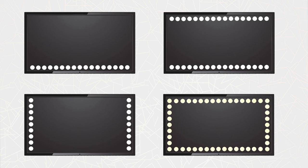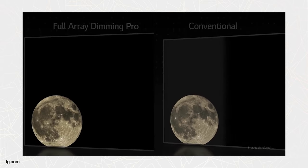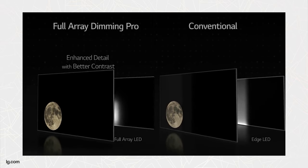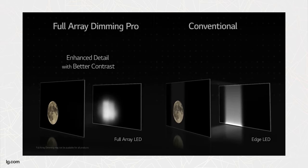Edge lit TVs feature, as the name suggests, LEDs around the edges of the screen. This can be done in a few ways: LEDs along the bottom, along the top and bottom, along the sides, or on all four edges. The main pro is that they are more affordable to produce in a wide range of sizes, but they aren't known for offering the best colors, motion or viewing angles. The TVs also tend to have a low contrast ratio and struggle to offer pure blacks, as light can spread into areas that should be dark, giving blacks more of a grayish feel. You might also see a halo of light around a bright object on a dark background, often referred to as blooming.